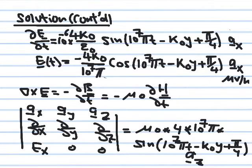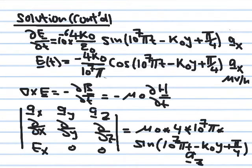Now we use the second curl equation to solve for k_naught. The second curl equation is curl E equals minus partial B partial t. Since B equals μ_naught H, and μ_naught is a constant, we differentiate H directly. H is 4 cosine(10^7 π t minus k_naught y plus π/4), so the derivative of cosine gives minus sine.